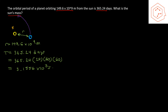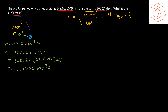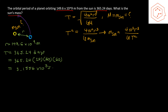Using the orbital period equation T = √(4π²r³/GM), where capital M is the mass of the sun, I square both sides to get T² = 4π²r³/(G·M_sun). Isolating for the mass of the sun gives M_sun = 4π²r³/(G·T²).